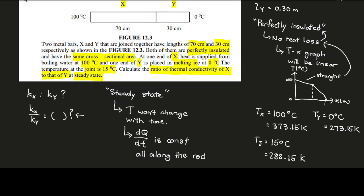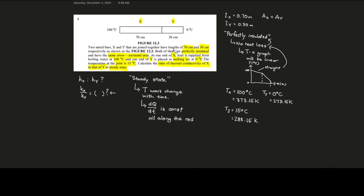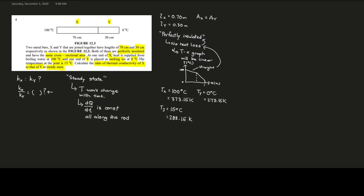Now let's solve the problem. The key is that steady state means dQ/dt is constant all along the rod. Therefore, dQ/dt for rod X equals dQ/dt for rod Y. Substituting the heat conduction formula: k_x · A_x · ΔT_x / L_x = k_y · A_y · ΔT_y / L_y.